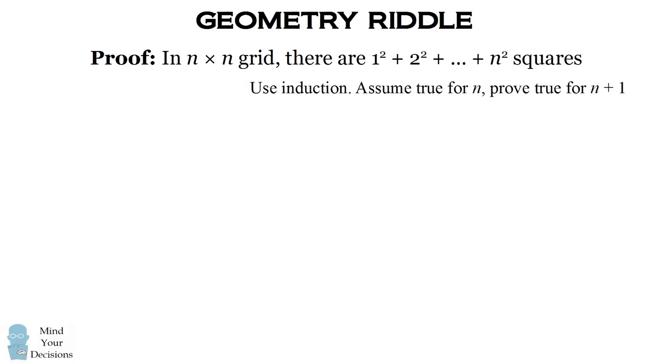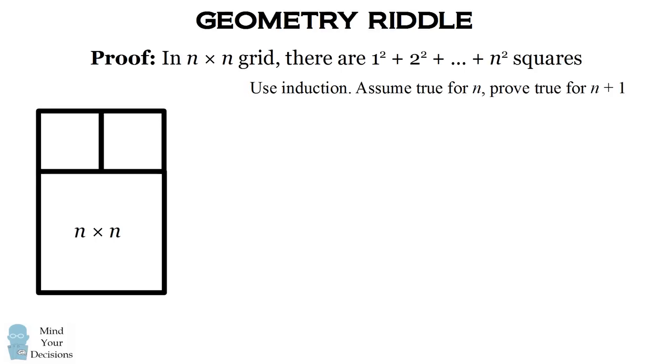We'll use induction. So we'll assume the formula is true for n, and we'll prove it's true for n+1. So we have an n by n grid, and we're going to add on 1 by 1 squares on the side so that we have an (n+1) × (n+1) grid.